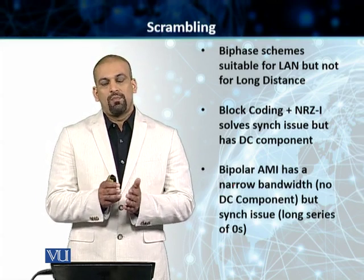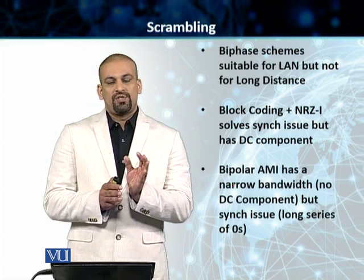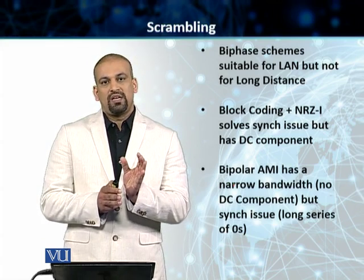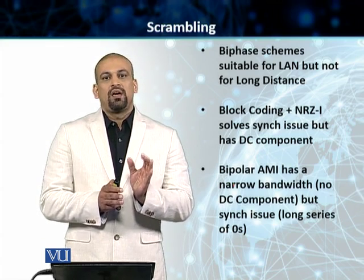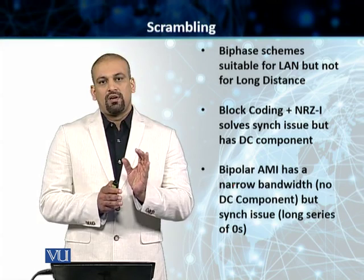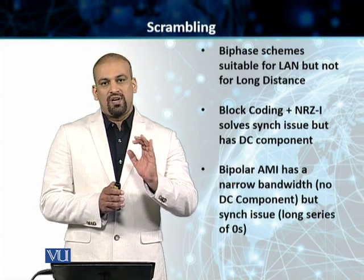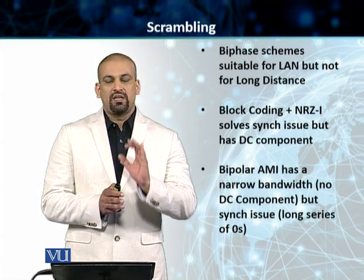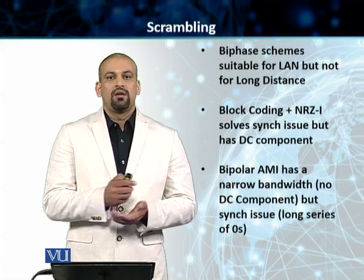Remember, in alternate mark inversion, our mark — which is a one in telegraphy — takes different forms. It gets inverted every time a one is encountered in an AMI stream.